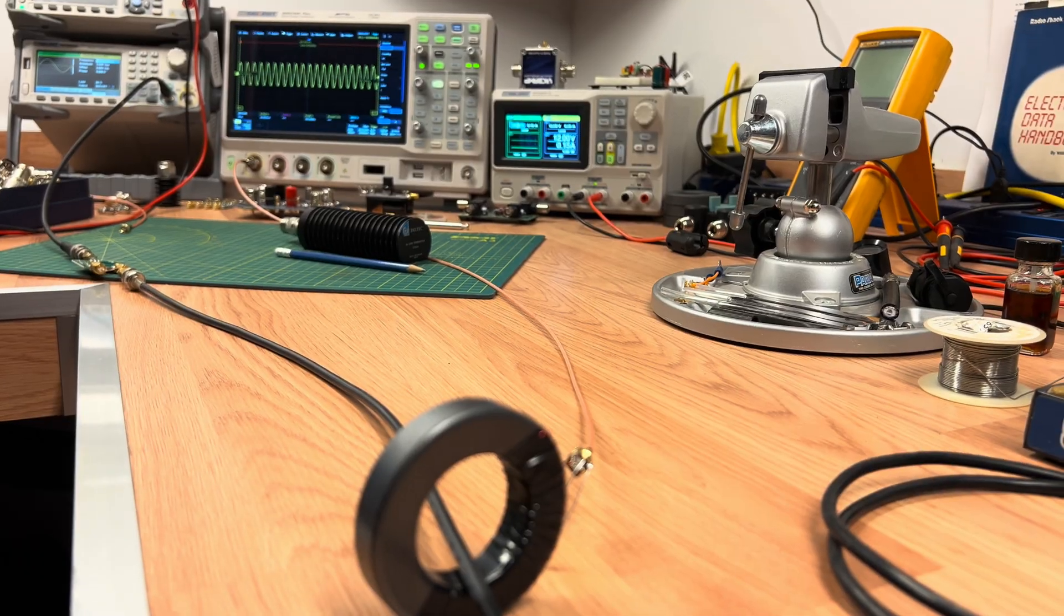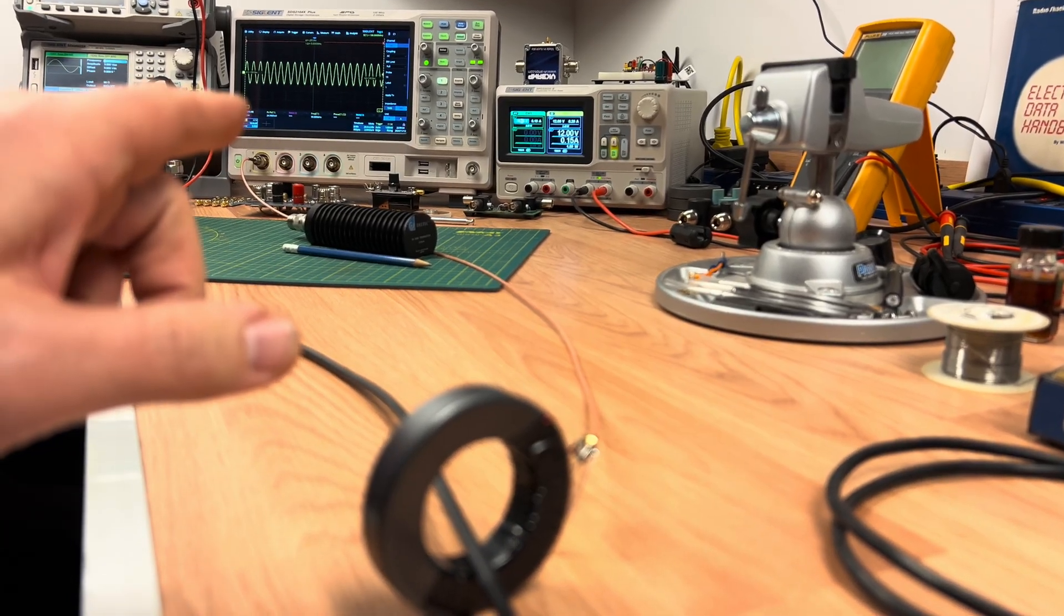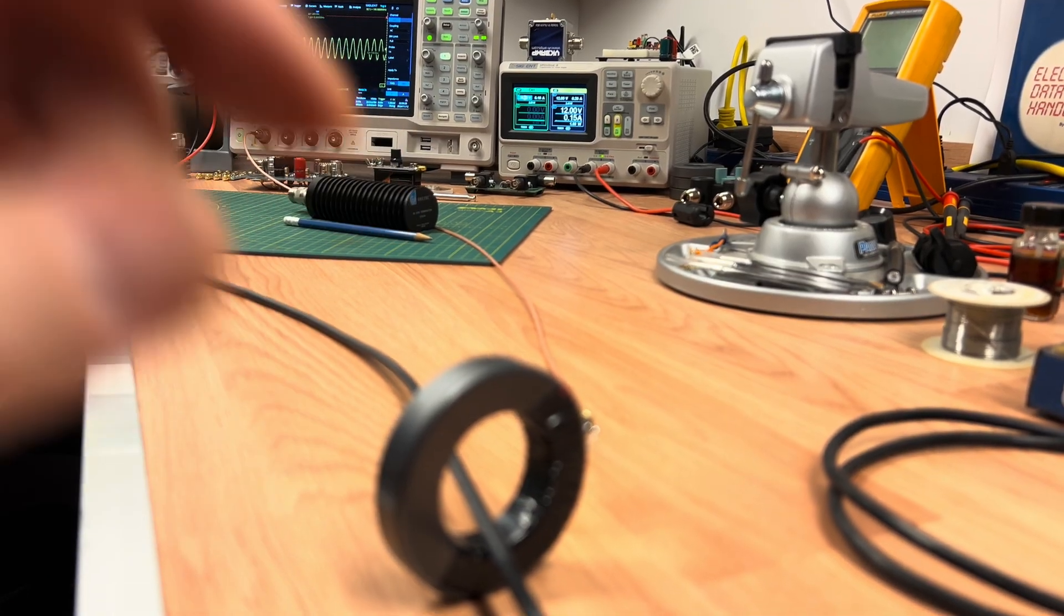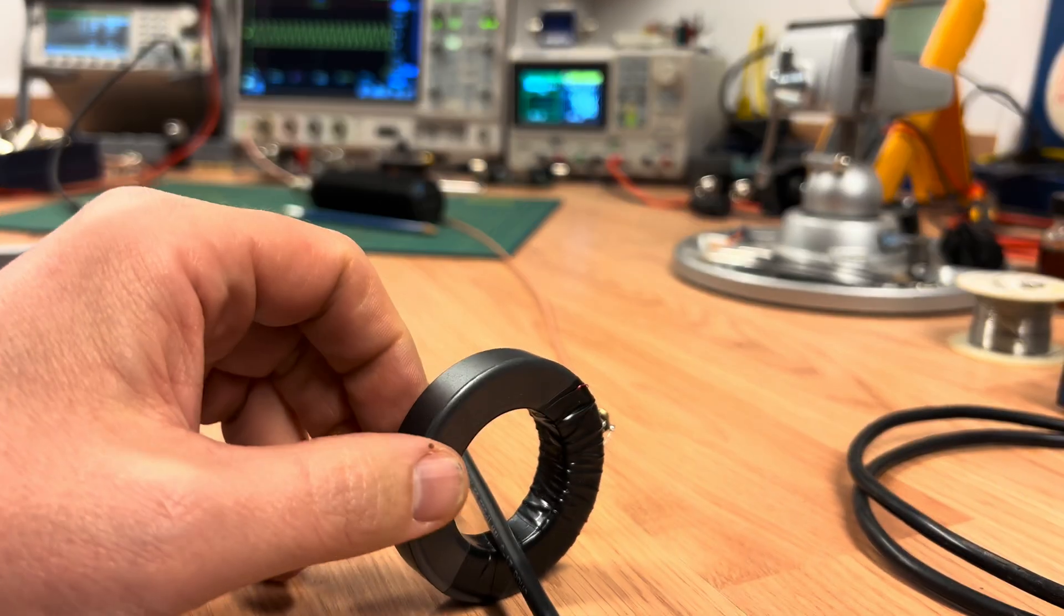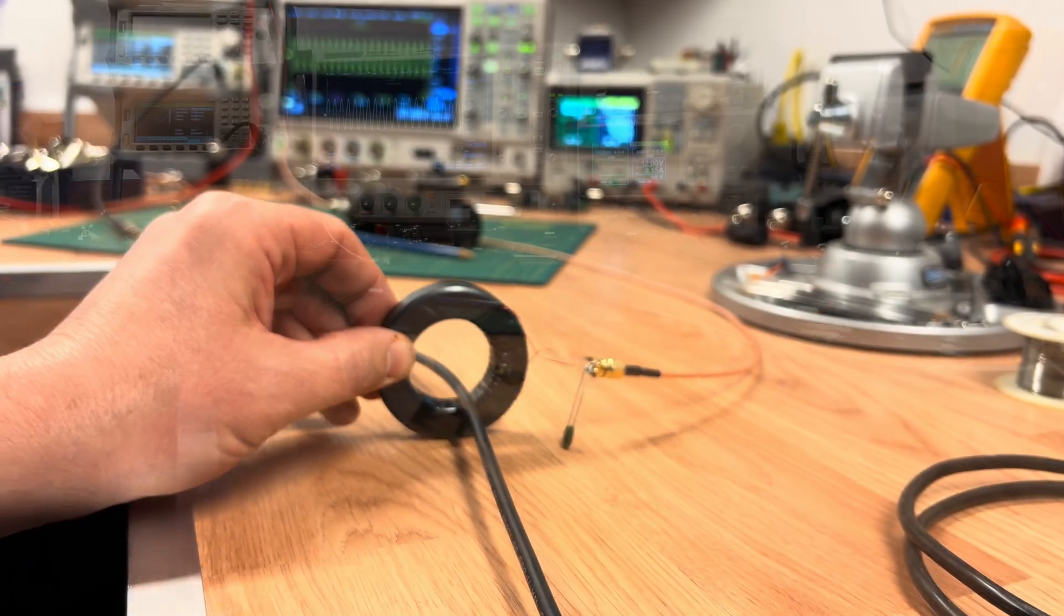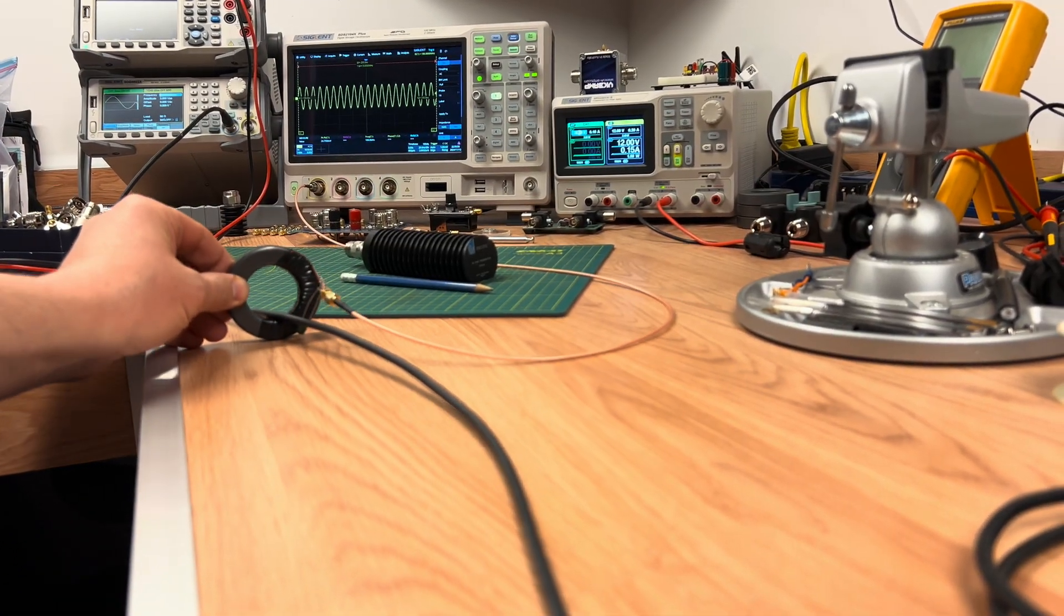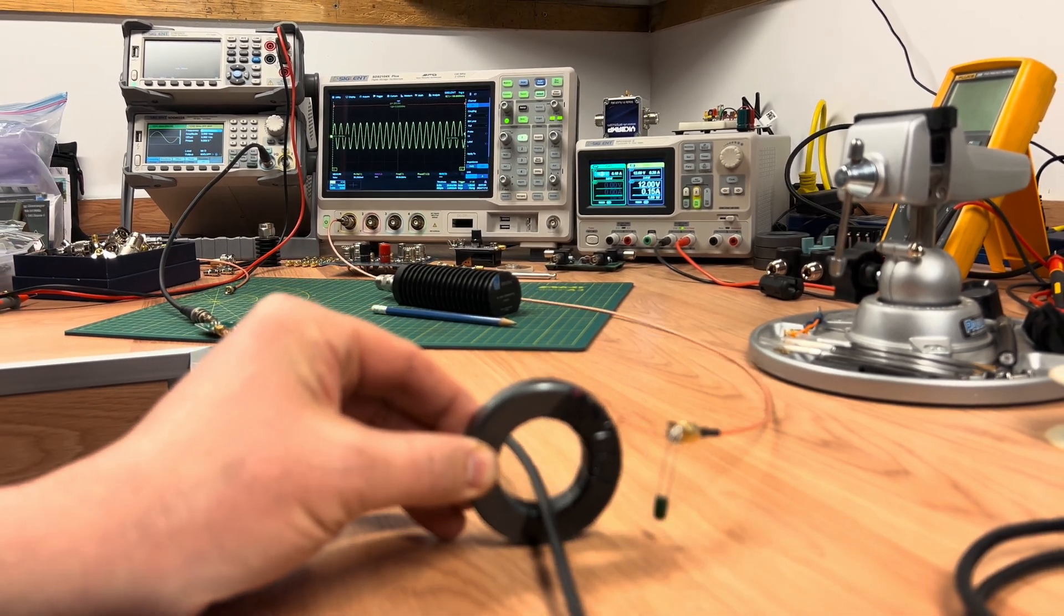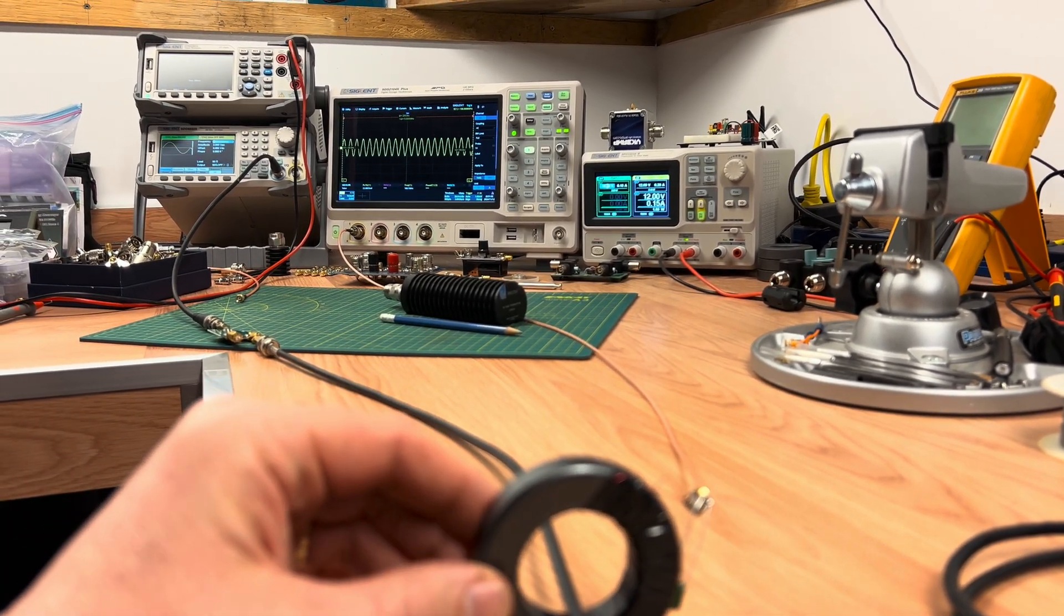So you can see the scope in the background there, and you can see that there is definitely signal there, and I'm just going to take and move the probe down the coax. If you see, we can move this all the way down. There is definitely signal on the outside of that coax right now.